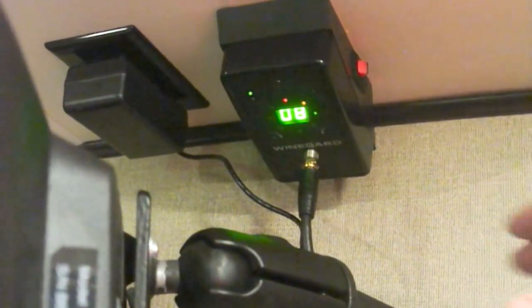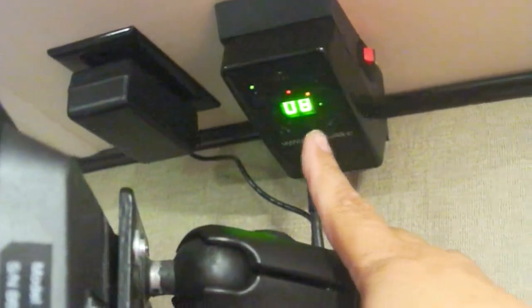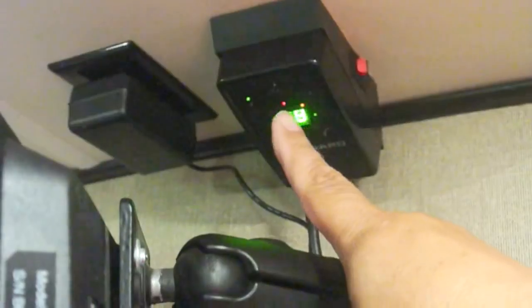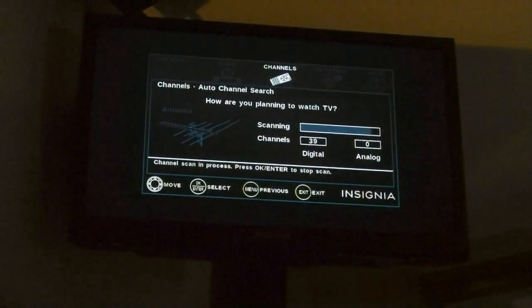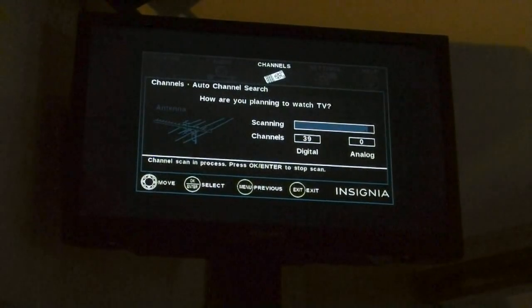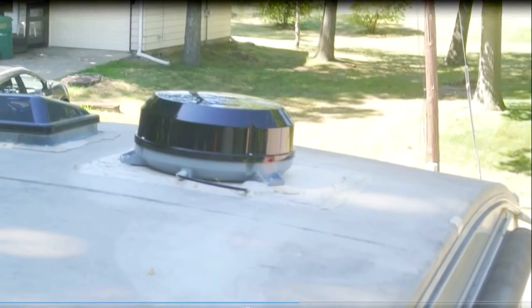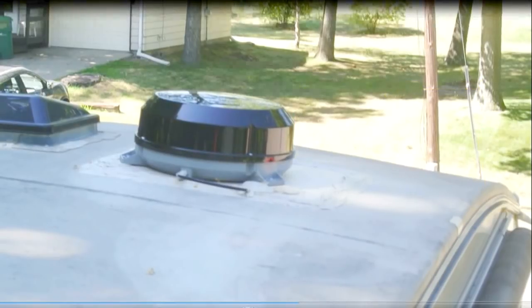We're doing our initial channel scan. We're almost done here. It looks like we've got 39 channels. So that's pretty impressive. 100% signal strength on the channel. And there we are. We have the antenna in. It's about 17 inches to the edge of the RV. Perfect.